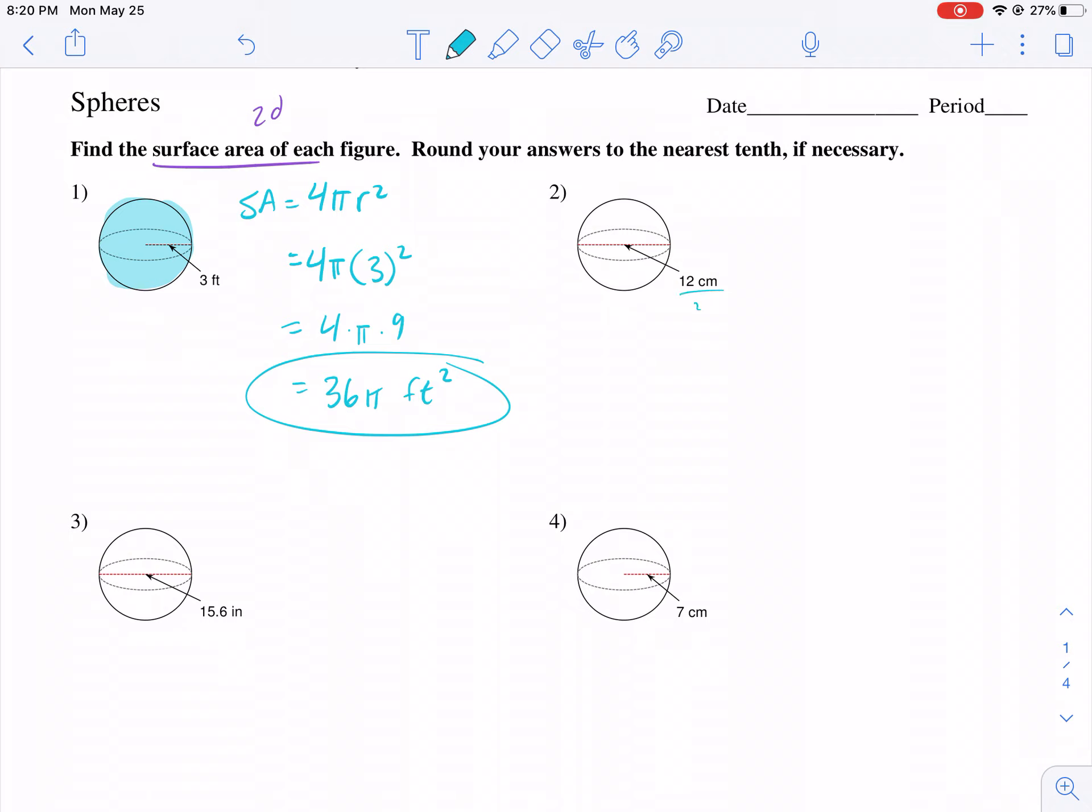Pretty easy. For number two, we recognize this is the diameter, so we divide this by two to get our radius which is 6, and we plug that in. 4 times π times our radius 6 and we square that, that's our surface area. We get 36 times π times 4, 36 times 4 is 144π centimeters squared.